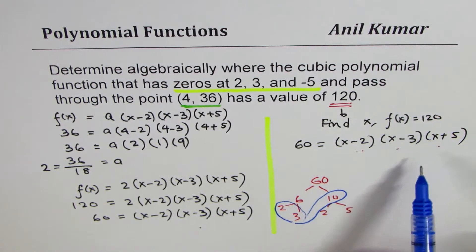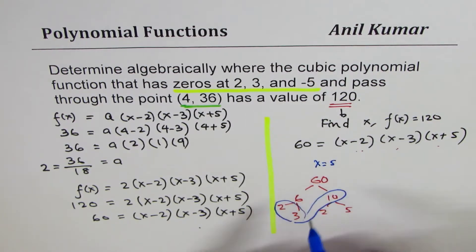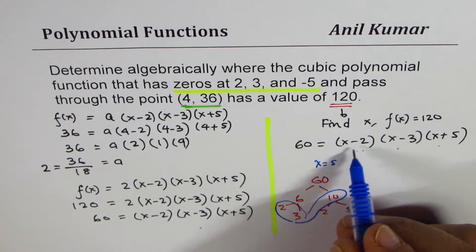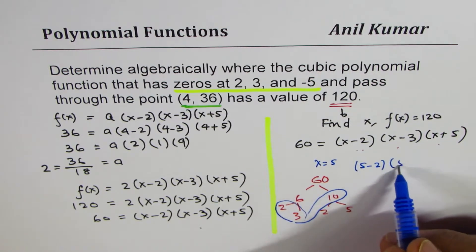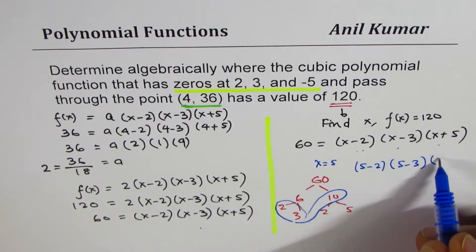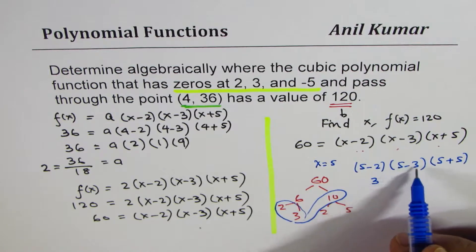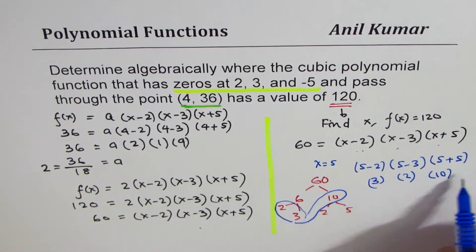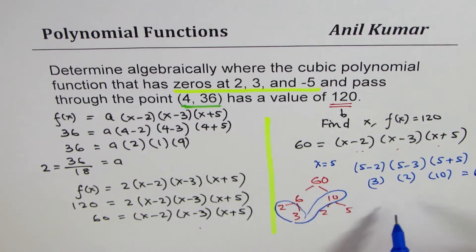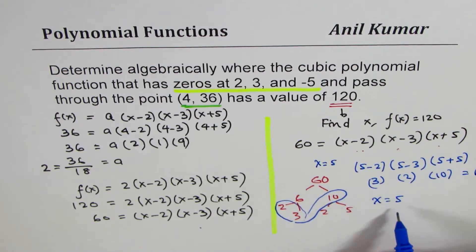Now, if you look at it, if I substitute x as 5, if I substitute x equals to 5, then what happens? In that case, we get (5 - 2) times (5 - 3) times (5 + 5), and that is (5 - 2) is 3, (5 - 3) is 2, and (5 + 5) is 10, and that is indeed equal to 60. And therefore, these factors work, and therefore I can say that x equals to 5 is the solution.